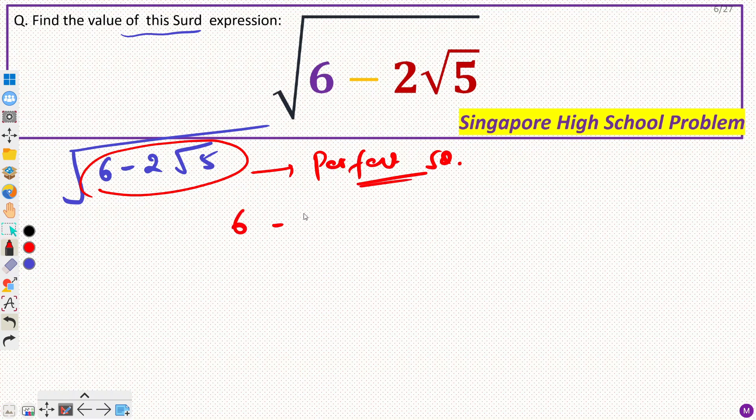So, we have 6 minus 2 root 5. Now, here we have minus sign. So, this will be of the format a minus b whole square. So, a square plus b square minus 2ab.